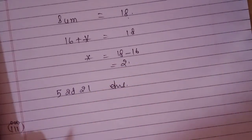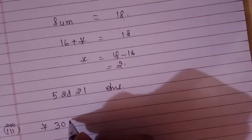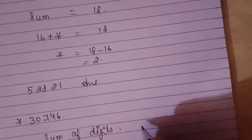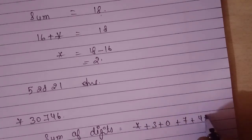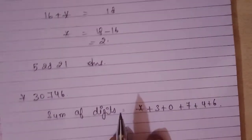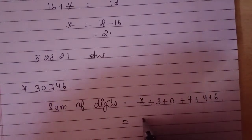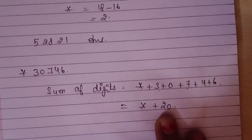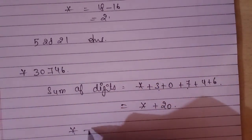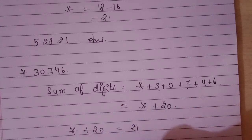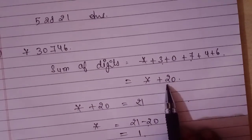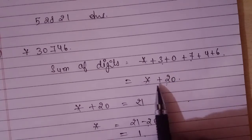Part 3: the number is *30746. Sum of digits is star plus 3 plus 0 plus 7 plus 4 plus 6 equals 20 plus star. After 20, the next number divisible by 3 is 21. So star equals 21 minus 20 equals 1. The number is 130746. Just keep in mind that your sum should be divisible by 3.